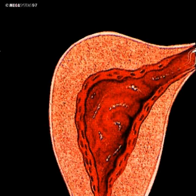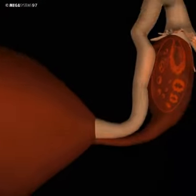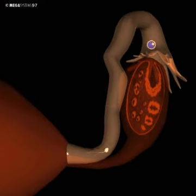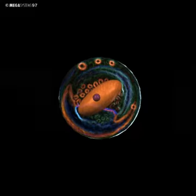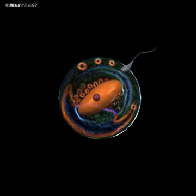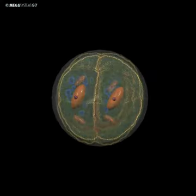Human life begins to develop when a male sperm cell fertilizes a female egg cell inside a fallopian tube. As soon as fusion has taken place, the cell begins to divide itself, laying down the sex of the child and its genetic traits.